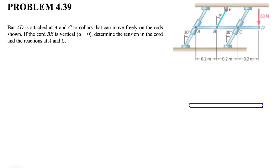Hello guys, welcome back. We have another question from chapter 4 in the Johnson textbook. We have the bar AD that is attached to collars A and C, which can move freely on the rods. If the chord B is vertical — meaning the angle alpha shown in the figure is zero — we need to determine the tension in the chord and the reaction at points A and C.